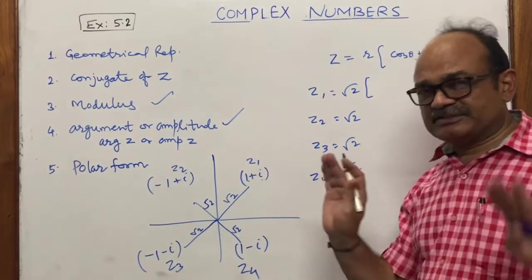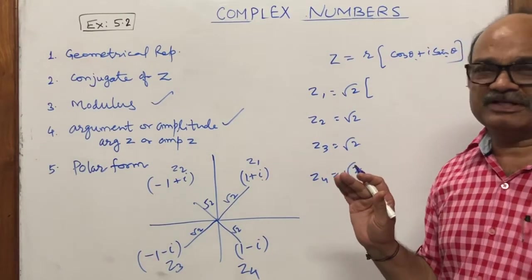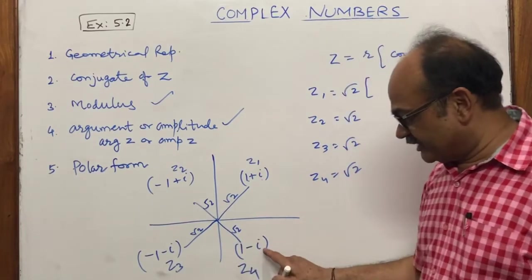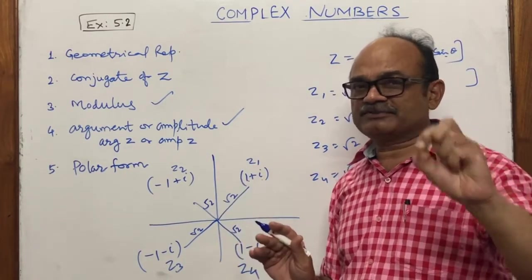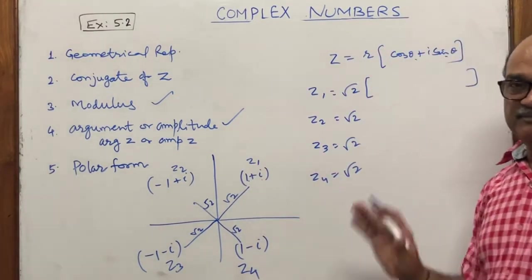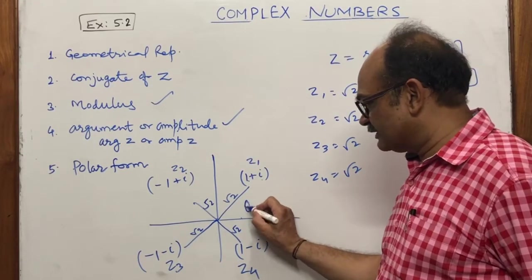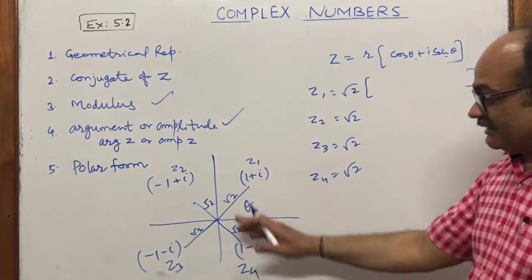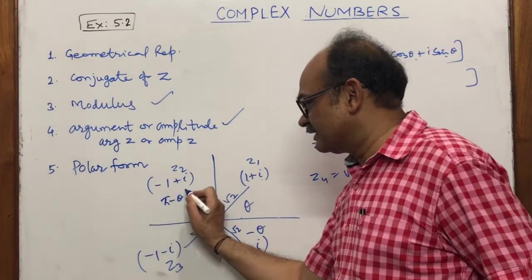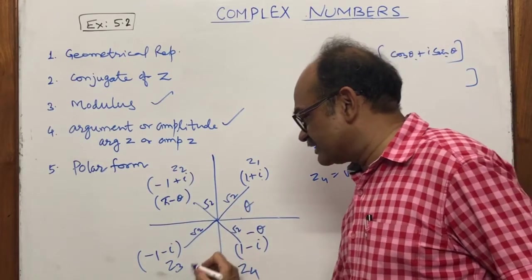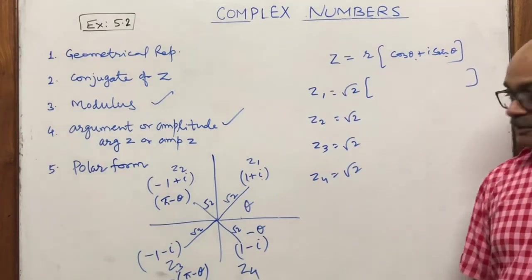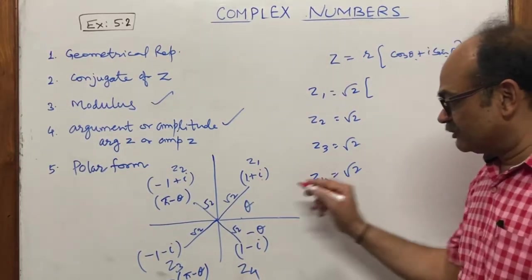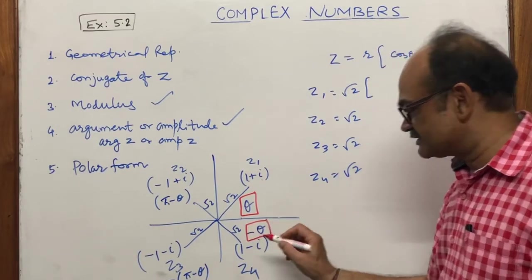To find the argument, first take only the absolute values: tan⁻¹(1/1) = 45° = π/4 for all four. The rule for each quadrant is: Quadrant 1 → θ; Quadrant 4 → −θ; Quadrant 2 → π − θ; Quadrant 3 → −(π − θ). These are the most important angle rules for polar representation.